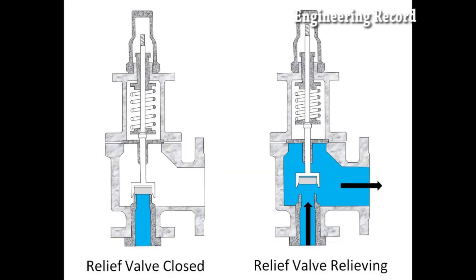Conventional type of PSV. The conventional PSV is the simplest one. This type of PSV is used whenever back pressure is relatively small and less than 10% of set pressure, or nearly zero. Due to its low immunity to back pressure, the conventional type outlet is vented to atmosphere, and mostly the fluid to be vented is non-hazardous fluid like water, air, and steam.